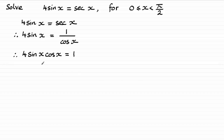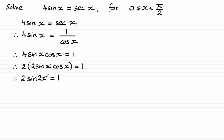I can see that the identity 2 sine x cosine x is basically in here. You should remember that 2 sine x cosine x is the same as sine 2x. By changing this to 2 multiplied by 2 sine x cosine x equals 1, I can pick up on the idea that this is sine 2x. Dividing both sides by 2 gives sine 2x equals 1 half.